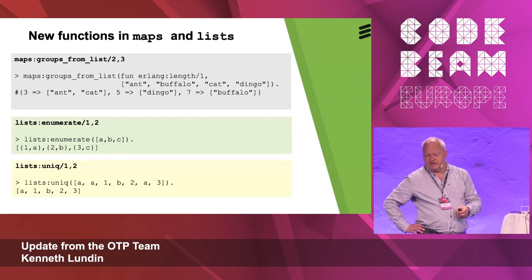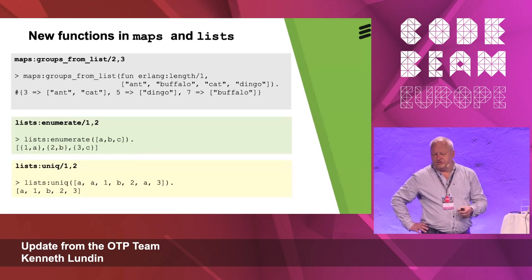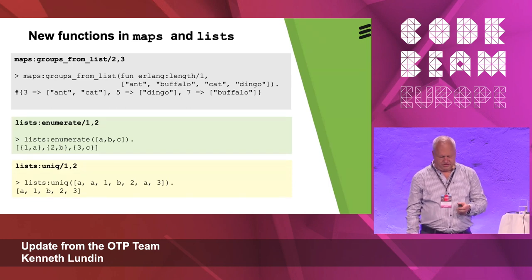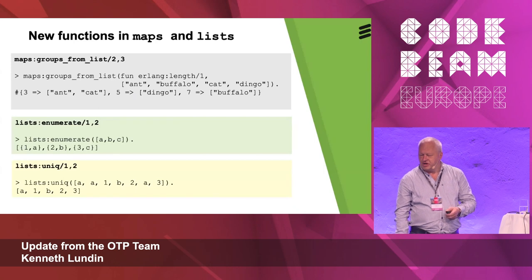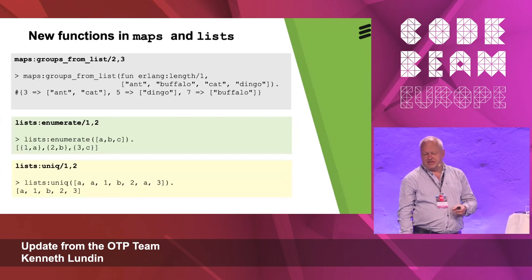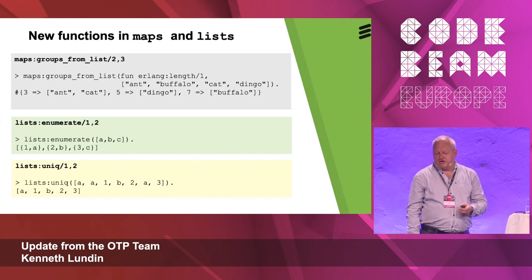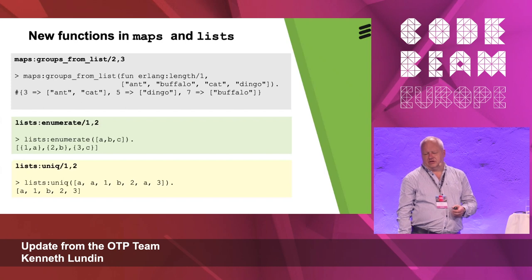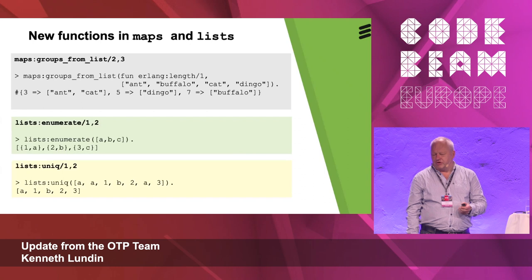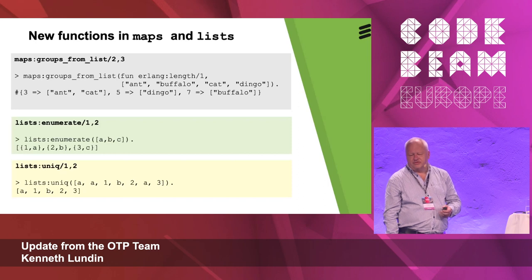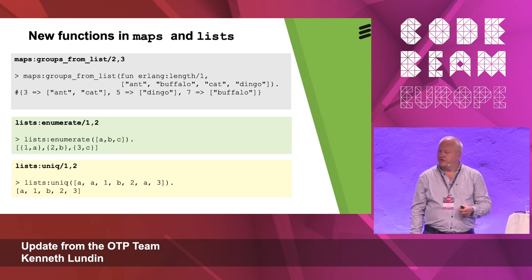One highlight is new functions in lists and maps. It's not so often that we have new functions in these modules — they are quite stable. But now we have maps:groups_from_list, which takes a list as input and returns a map with groups from the input list. In this case, the category is the length of the strings. That can be quite useful.